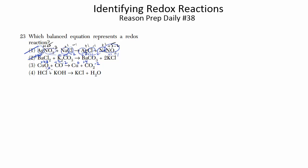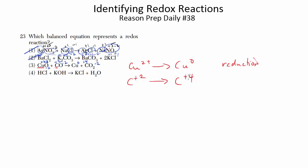Not all of the elements change — oxygen is still -2 on both sides — but you do have a change. Copper is going from +2 to zero, and the carbon in carbon monoxide is going from +2 to +4. Copper is decreasing its oxidation number, gaining electrons — that's our reduction. Carbon is increasing its oxidation number, losing electrons — that's our oxidation. Because this equation has a change in oxidation numbers, three is our answer. You can check reaction four on your own and you'll see the oxidation numbers do not change.